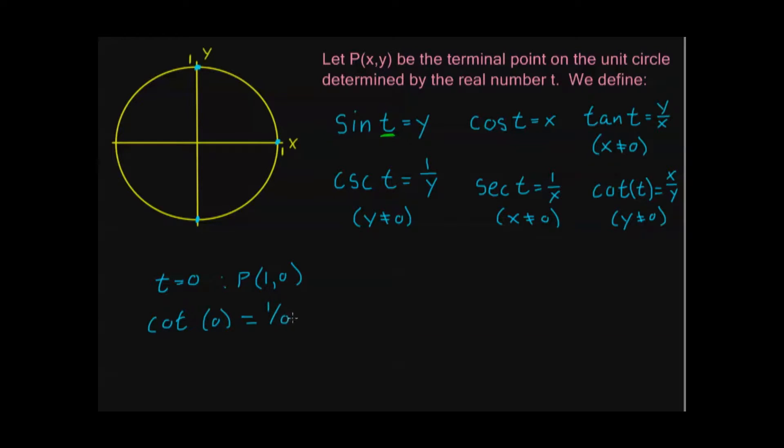So, cotangent of 0, that's equal to x over y, or in other words, 1 over 0, just like we had with tangent up at π over 2. And, cosecant of 0 is 1 over y, so it's also equal to 1 over 0, isn't it? So, in both cases, these do not exist. And, again, we know that they do not exist for y equals 0. But, more specifically, we're interested in our domain restriction, right? So, we want to note for what values of t do these not exist, so we can avoid those values of t.